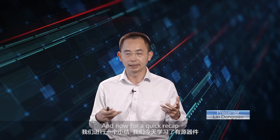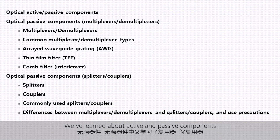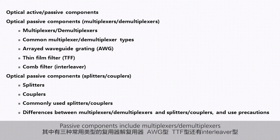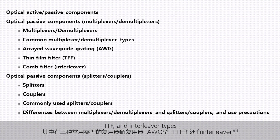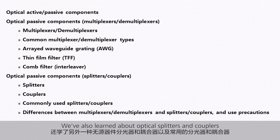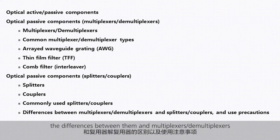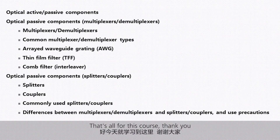And now for a quick recap. We've learned about active and passive components. Passive components include multiplexers and demultiplexers, which are further classified into AWG, TFF, and interleaver types. We've also learned about optical splitters and couplers, the differences between them and multiplexers and demultiplexers, and their use precautions. That's all for this course. Thank you.